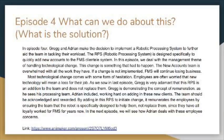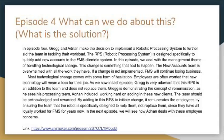In episode four, Managerial Problem Solving, Greg and Adrian decide to implement a robotic processing system — the RPS — to further aid the team in tackling their workload. The RPS is designed specifically to quickly add new accounts to the FMS clientele system. The management theme of this episode is handling technological change. Most technological change comes with some form of hesitation, as employees are often worried that new technology will mean a loss of their job. Greg is very adamant that the RPS is an addition to the team and does not replace them. By adding the RPS to initiate change, it remunerates the employees by ensuring the team that the robot is specifically designed to help them, not replace them, since they all have loyalty to FMS.